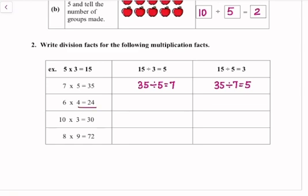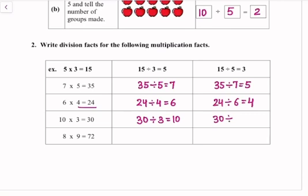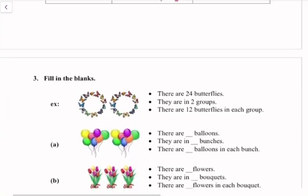Next, 10 × 3 = 30, so 30 ÷ 3 = 10 and 30 ÷ 10 = 3. Next, 8 × 9 = 72, so 72 ÷ 9 = 8 and 72 ÷ 8 = 9.